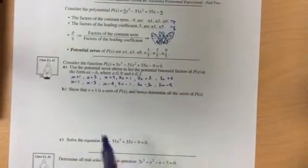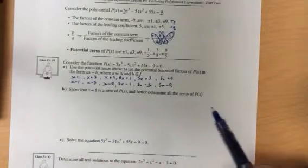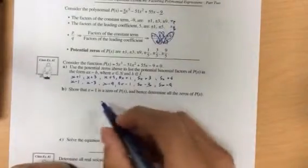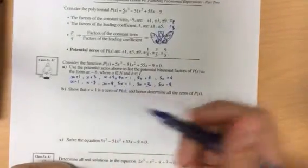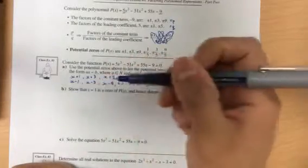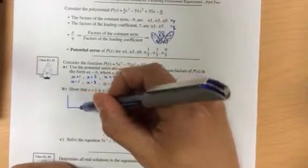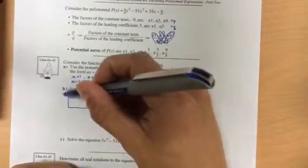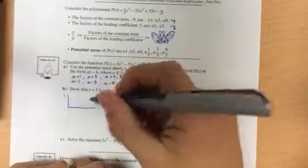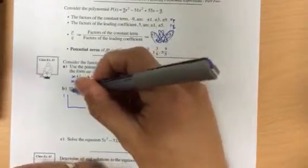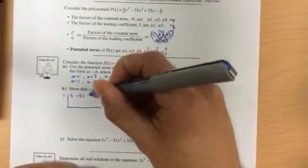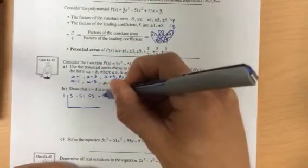Now what we're going to do is show that x equals 1 is a zero of p of x and then determine all the other zeros of p of x. So if I'm trying to prove that x equals 1 is a zero, then I could do it either two ways. I could use my rational zero theorem, plug it into p of x, or I could find the synthetic division of the problem.